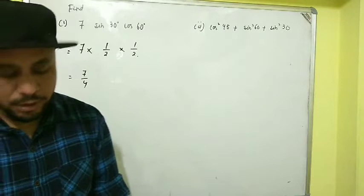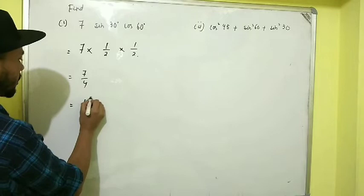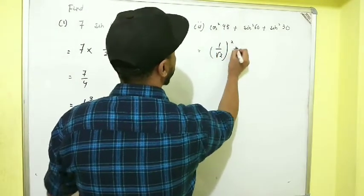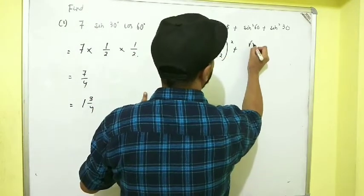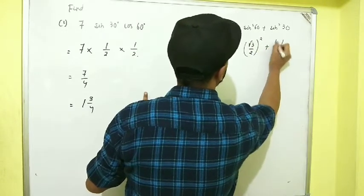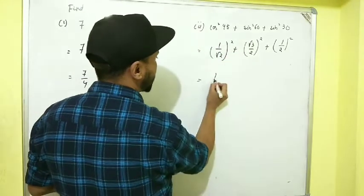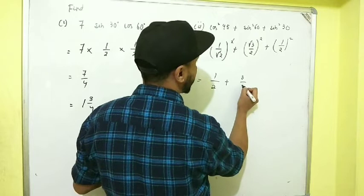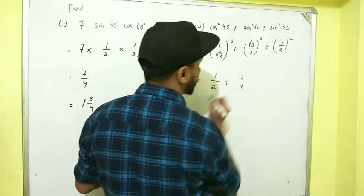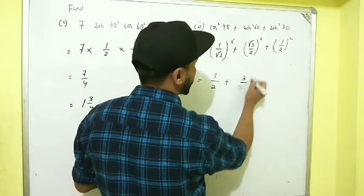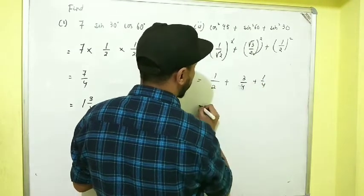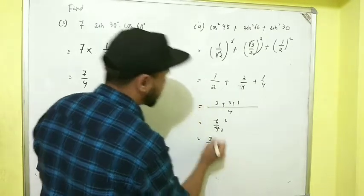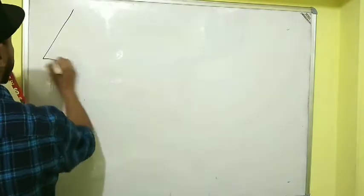That gives 7/4 — or you can write it as a mixed fraction. The second example: cos²45° + sin 60° · sin 30°. cos 45° = 1/√2, so cos²45° = 1/2. sin 60° = √3/2 and sin 30° = 1/2. Now 1² = 1 and the square root cancels, giving 1/2. Be careful — many people incorrectly cancel terms and write 3/4. The square applies to the 2 as well, giving 1/4. Taking LCM of 4: (2 + 3 + 1)/4 = 6/4 = 3/2.